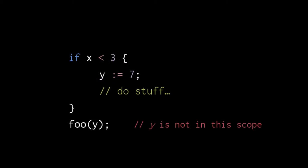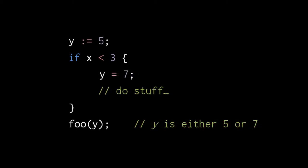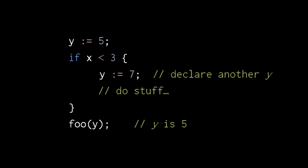Another difference from JavaScript is that control flow constructs like if-else and loops are each their own scope. Here we declare a variable y inside this if, and so y only exists inside the if. If we move the declaration of y above the if, it now exists both within the if and without. When we declare a variable y both outside the if and also within, then these are two separate variables that just happen to share the same name. Outside the if, y refers to the outer variable; inside the if, y refers to the inner variable. So here the call to foo is passed the value of the outer y, which was last assigned 5.